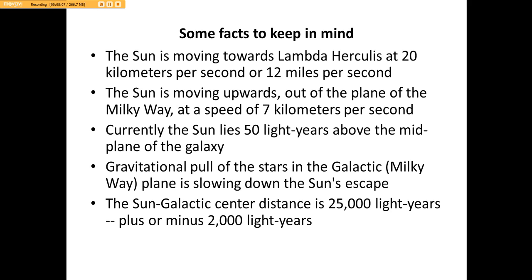In fact, we're heading there rather quick. So I brought up some fun facts. The sun is moving towards Lambda Hercules at 20 kilometers per second, or 12 miles per second. When you're looking at SECCHI, you're looking at SDO, you're looking at pictures of space, just remember where we are in the neighborhood. Since I started this video, we have already moved some 20,000 miles about the circumference of the Earth. The sun is moving upwards out of the plane of the Milky Way at a speed of 7 kilometers per second. Currently, the sun lies 50 light years above the midplane of the galaxy. The gravitational pull of the stars in the galactic plane is slowing down the sun's escape. The sun-galactic center distance is 25,000 light years, plus or minus 2,000 light years.